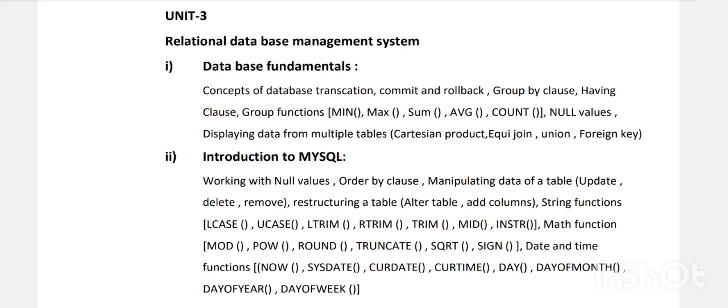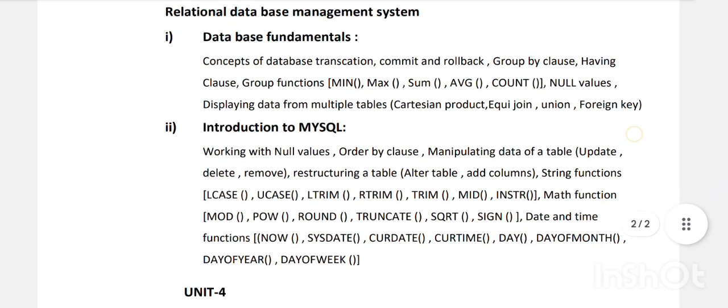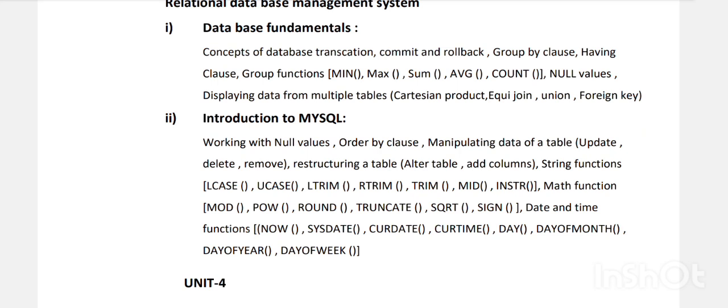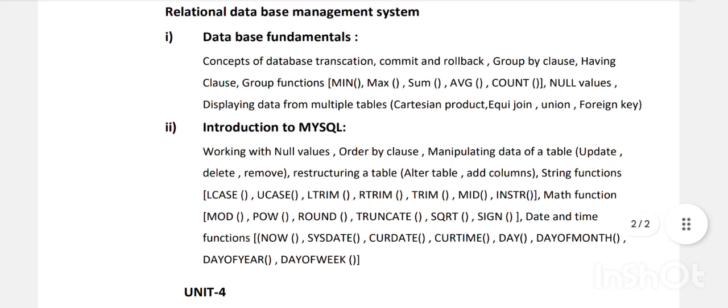Unit Three consists of two chapters. Chapter One is RDBMS — Relational Database Management System. Previously in first year you studied database fundamentals: what are database transactions, commit, rollback, group functions, aggregate functions (mean, maximum, average, count), displaying data from multiple tables using Cartesian, equi-join, and union, and foreign key.